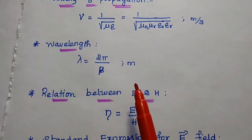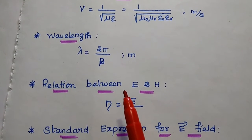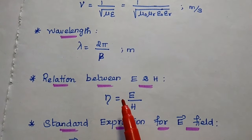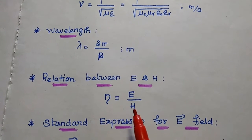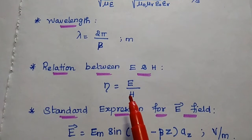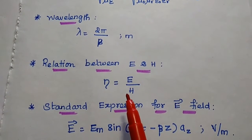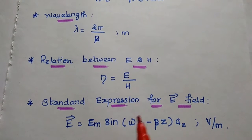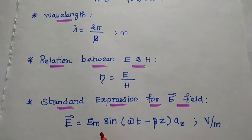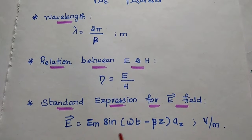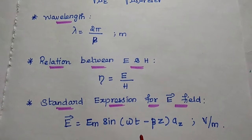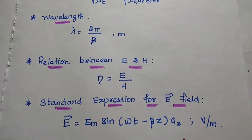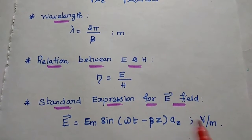The relation between electric field and magnetic field is given as eta equals E divided by H. The standard expression for electric field is E vector equals Em sin(ωt − βz) a_z, in volts per meter.